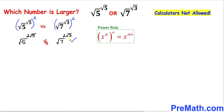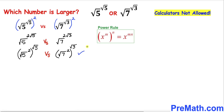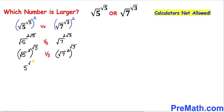And likewise the right hand side number could be written as square root of 7 raised to the power 2 times square root of 3. In this next step we are going to use this power rule once again in a backward manner, and we can see that this square and square root undo each other. So this left hand side number is going to become 5 raised to the power square root of 5.